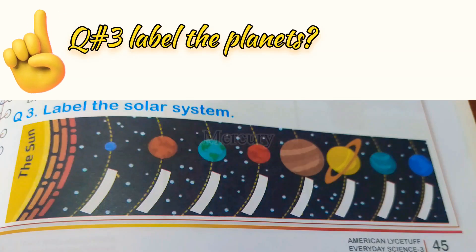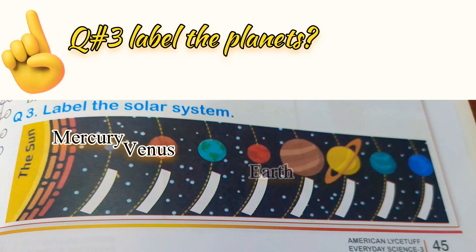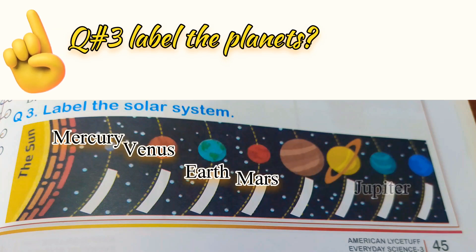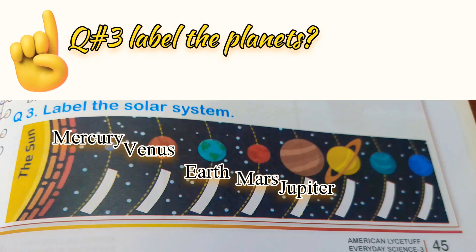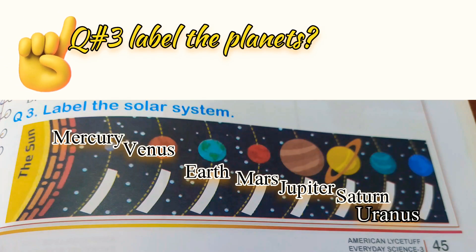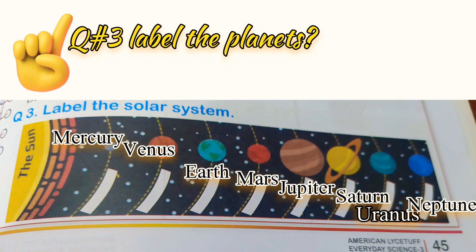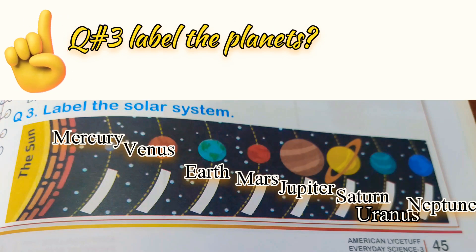Now we will do question number three. Mercury, Venus, Earth, Mars, Jupiter, Saturn, Uranus, Neptune. So we have done the labelling. Question number three was to label the solar system.